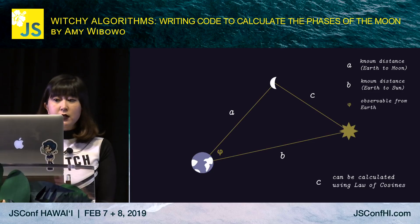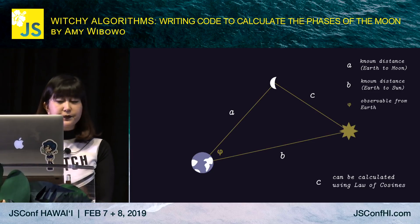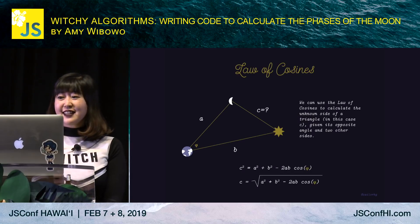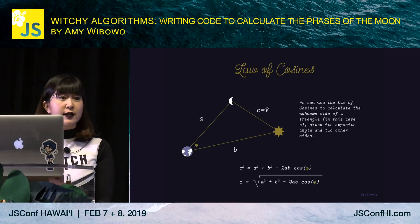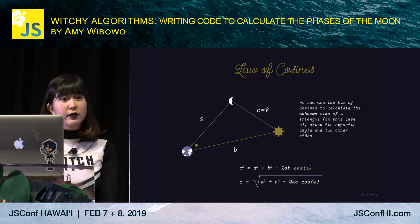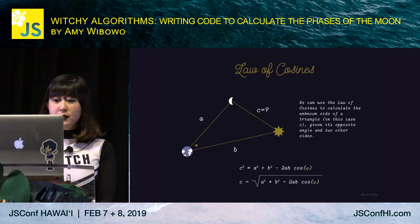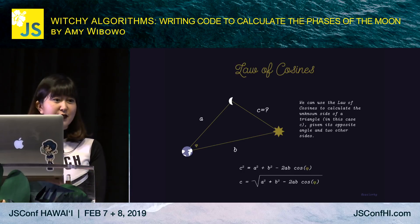With this information, we can calculate the last side, c, with the law of cosines. A quick refresher: the law of cosines lets you calculate the length of an unknown side of a triangle given its opposite angle and two other sides. So given that we know phi, a, and b, c — the distance between the moon and the sun — is the square root of a squared plus b squared minus 2ab cosine phi.